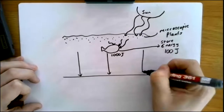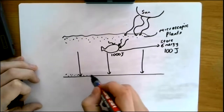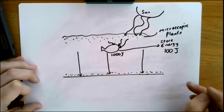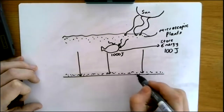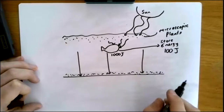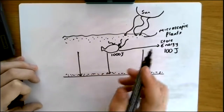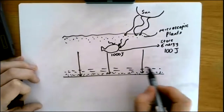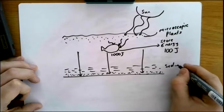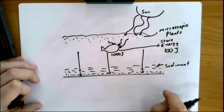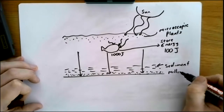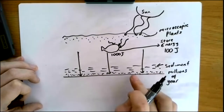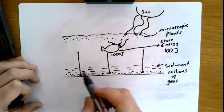So when they die they fall to the bottom and they collect there. Over millions of years the layers of them build up. But what also builds up is not just the dead plants and animals — we also get deposits of minerals, mud, silt and clay on top, and we call this sediment. Sediment is deposited minerals, clay and rock. Over millions of years the layers of dead plants and animals and the layers of sediment build up on the ocean bed.